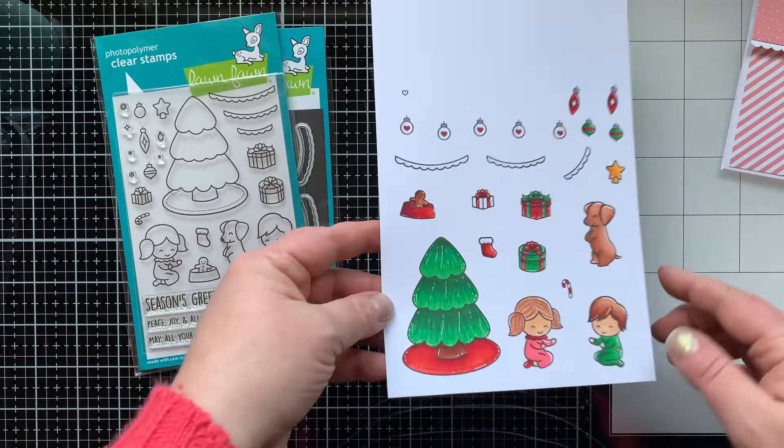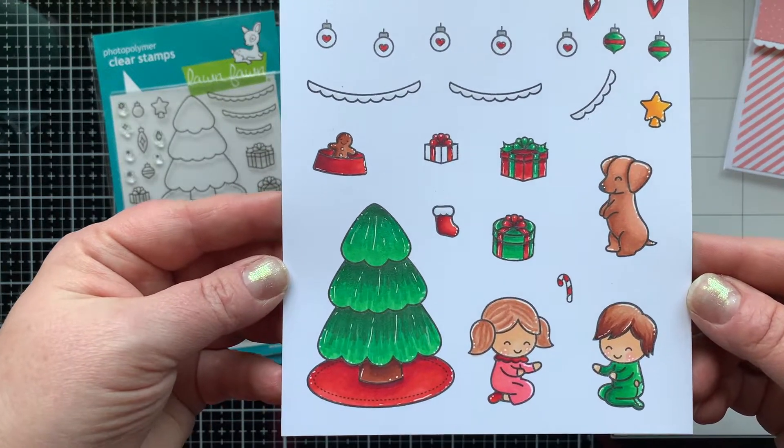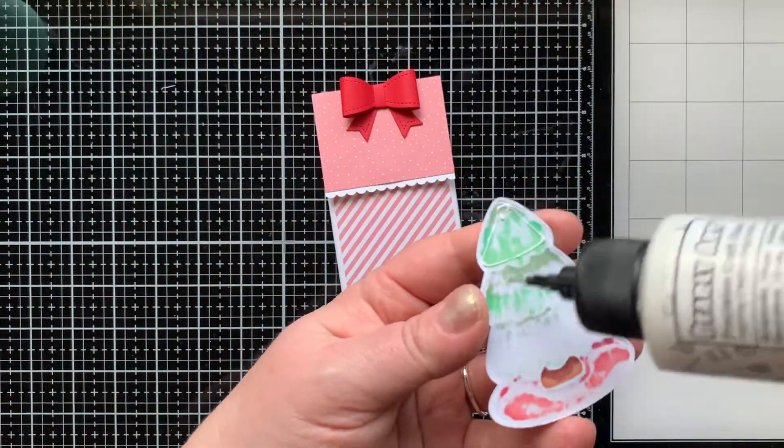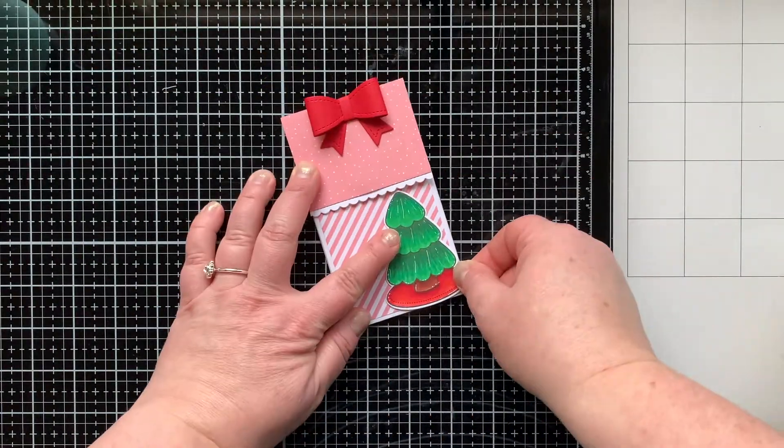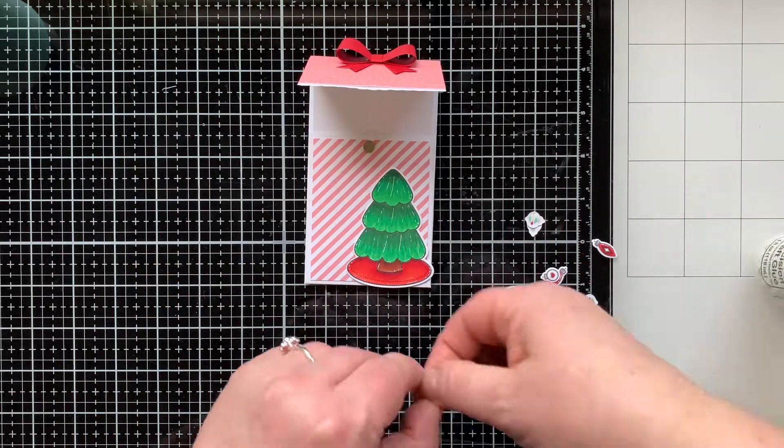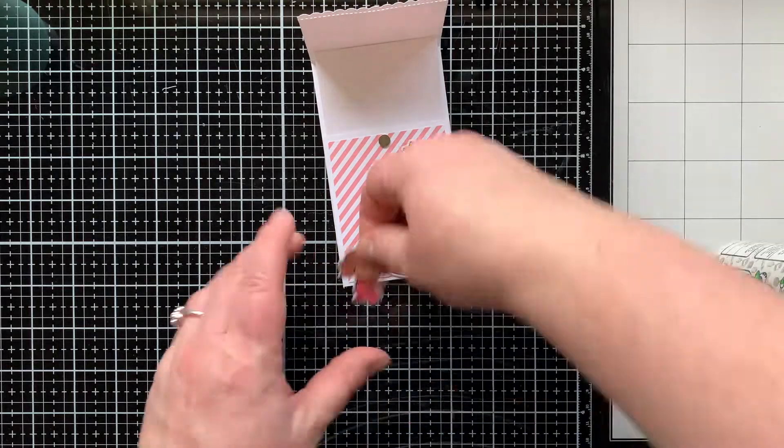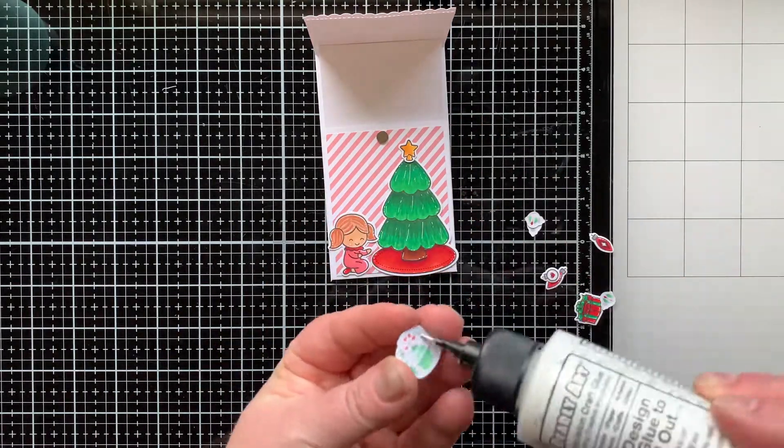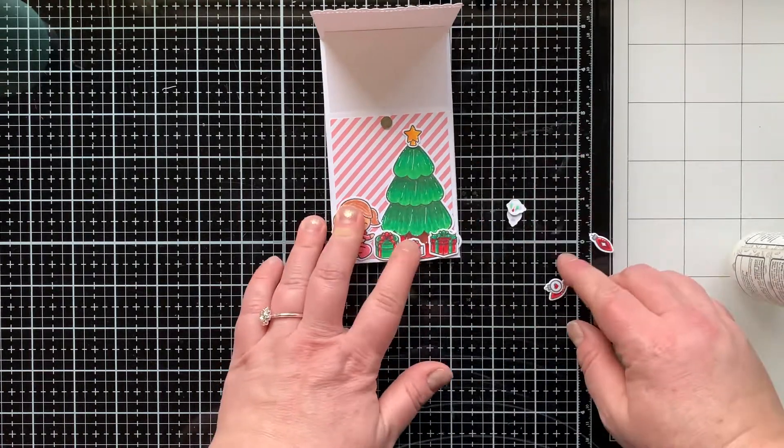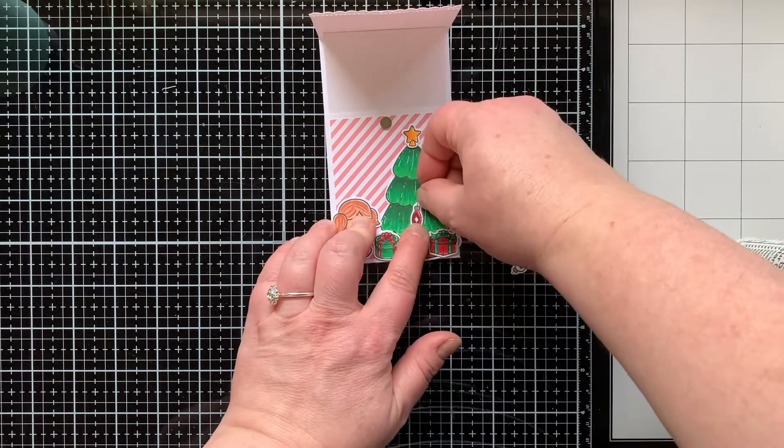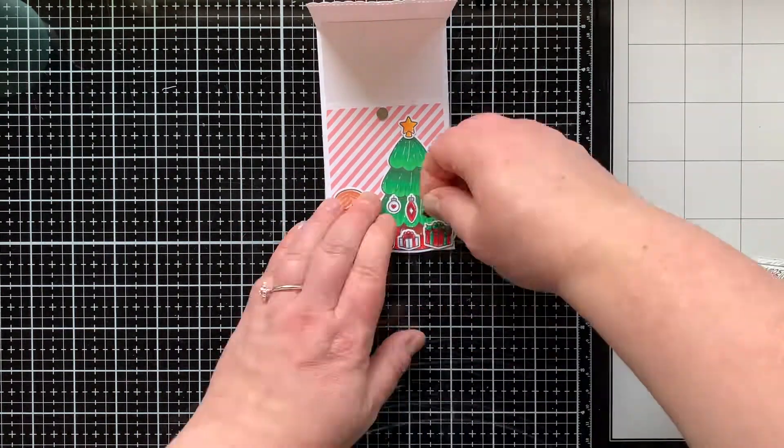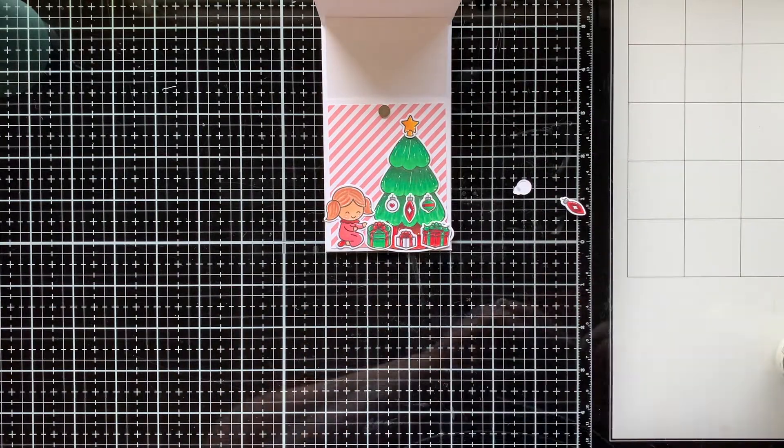So I have these images already colored and die cut out because me and my daughter sat, stamped and colored while we were watching A Christmas Carol, the original one—well, or one of the older ones anyway. I know there's lots of versions, but it was a really fun thing to do for Christmas and we enjoyed it. So I highly recommend that: sit and do some card making or coloring and watch a Christmas movie. It's the perfect holiday thing to do.